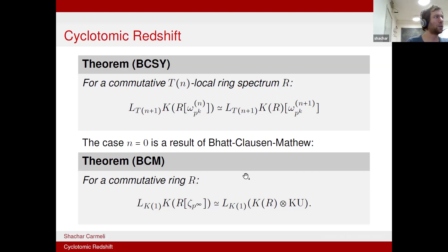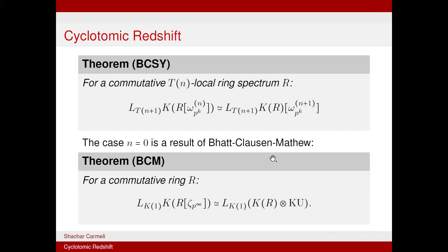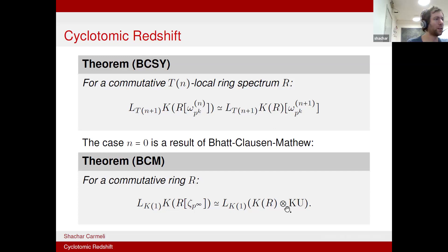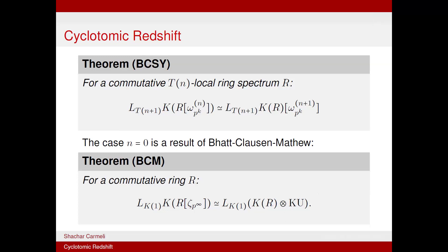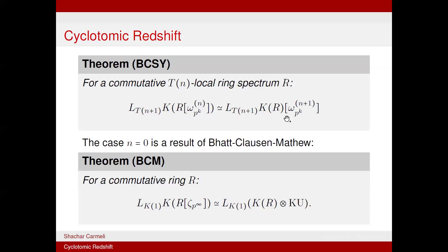There is a question about a possibly misplaced parenthesis in the statement of the last theorem. The intended meaning is: on the right-hand side, you take K-theory of R, tensor it with KU, and then K1-localize. Adjoining roots of unity implicitly happens in the TN+1 local category, so TN+1 localization is implicit on the right-hand side. The BCM theorem is essentially the N=0 case of the general theorem, taking k to infinity.